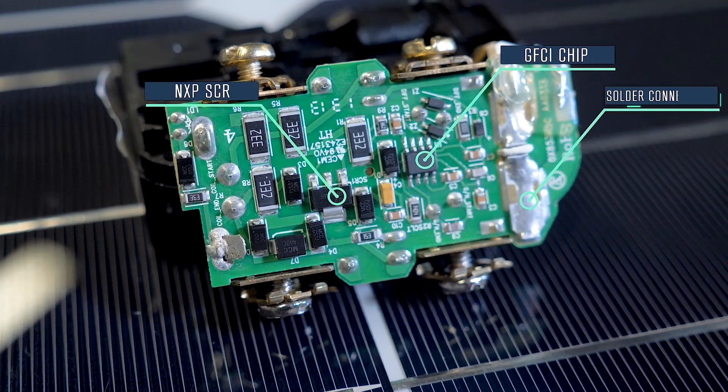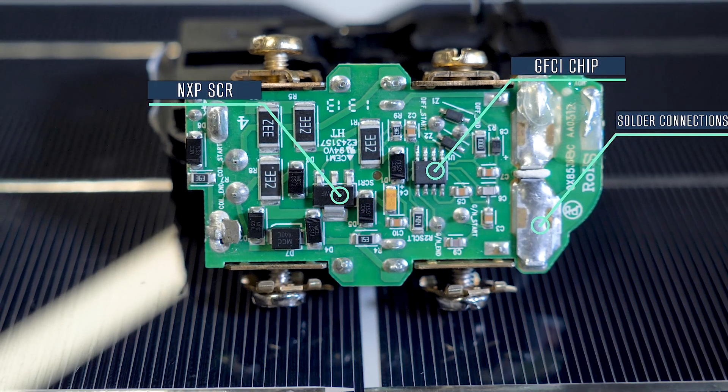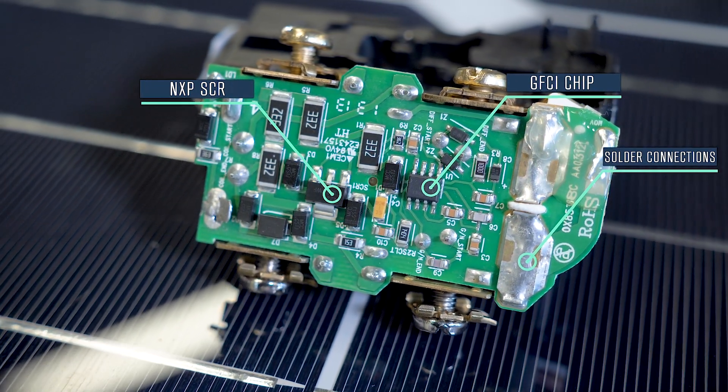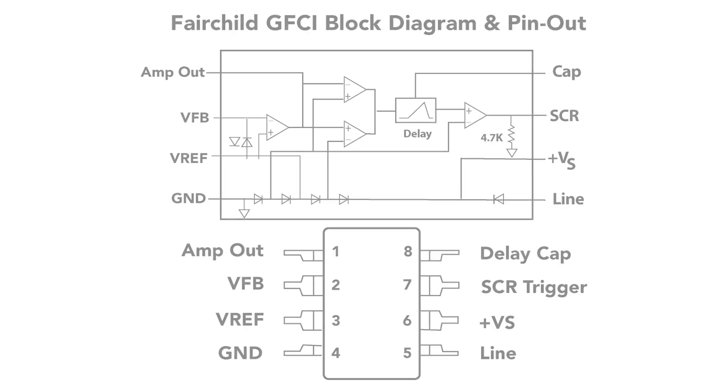The other main device on the board is a silicon controlled rectifier made by Annex-P which is used to trigger the solenoid and switch off electrical contacts in the event of a fault.